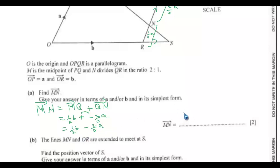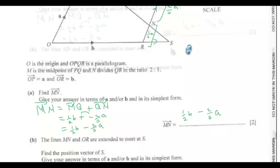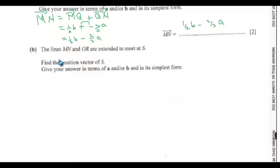So the final answer for MN is (1/2)B − (2/3)A. Part b: the lines MN and OR are extended to meet at S. Find the position vector of S.